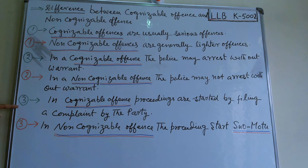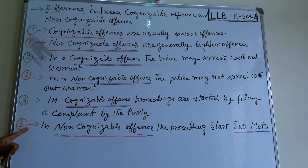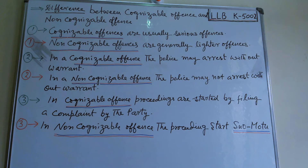Third point of difference: in a non-cognizable offense, proceedings are started by filing a complaint by the party. In a cognizable offense, proceedings start suo motu — that is, on the court's or police's own motion. This is the third point of differentiation: how proceedings are started.